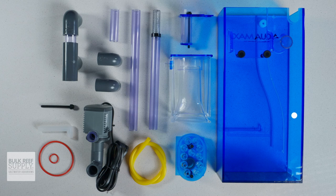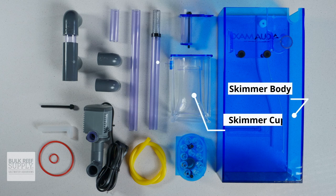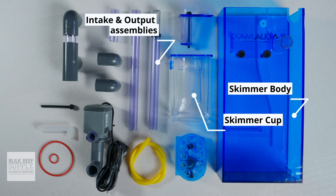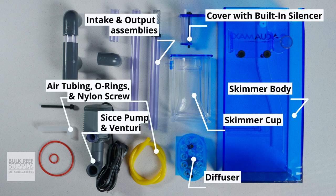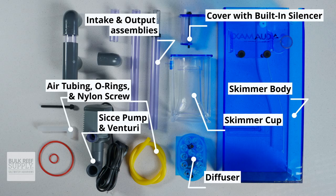When you open up the box, you'll find the skimmer body, the skimmer cup, the intake and output assemblies, the diffuser, the cover with the built-in air silencer, a pack with air tubing, O-rings and a single long nylon screw, as well as the Siche skimmer pump and the instructions.